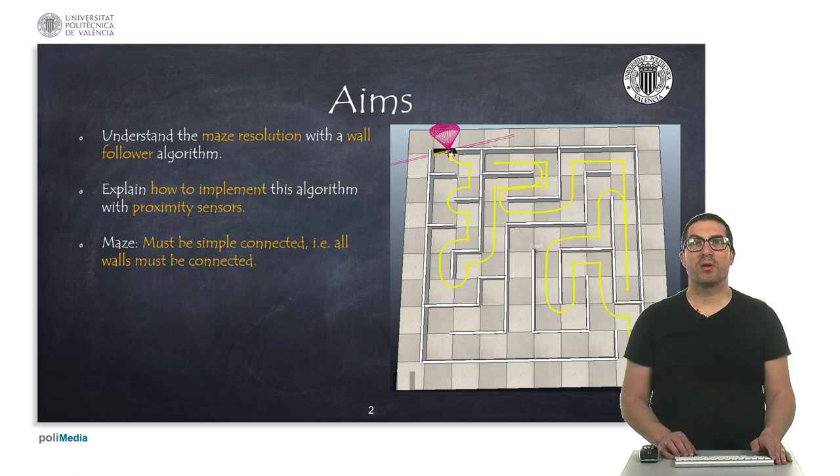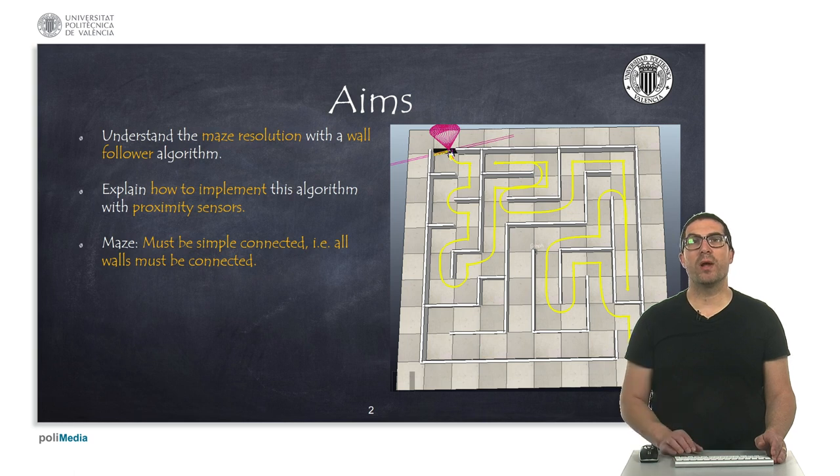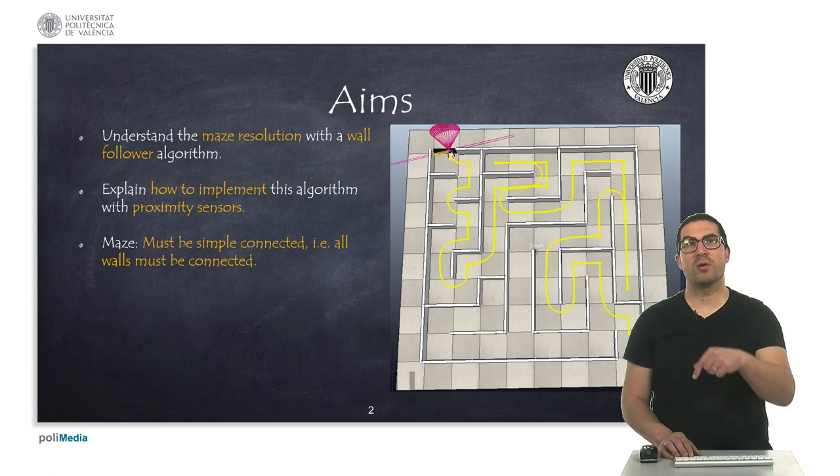The idea is to use proximity sensors that will allow us to detect walls. In particular, we will use an ultrasound sensor to detect walls in front of the robot and two lidar sensors to detect the walls on one of the sides of the robot. The entrance and exit of the maze must be at the outer perimeter of the maze.